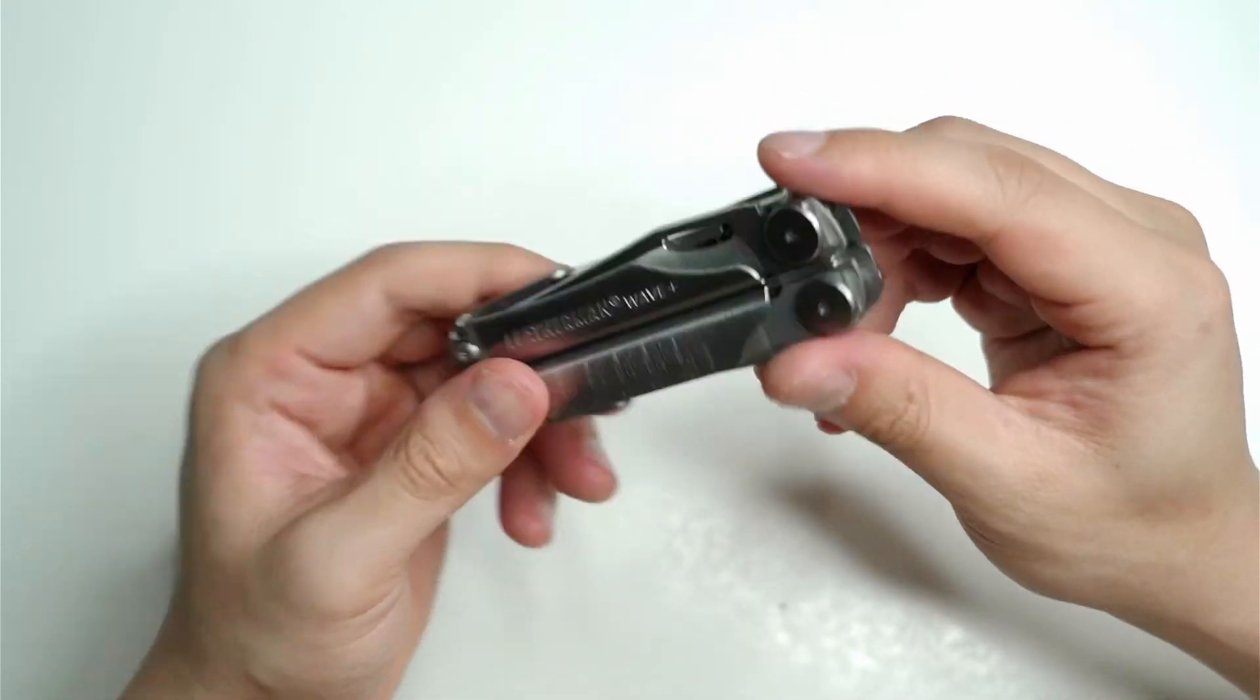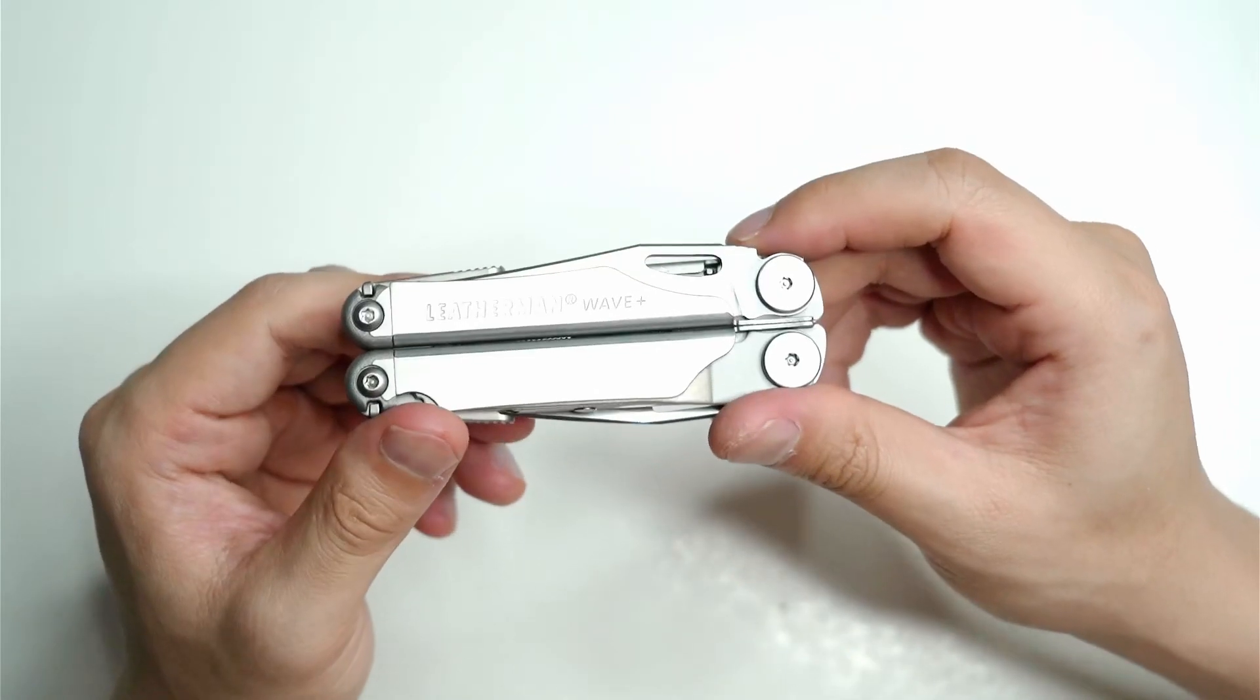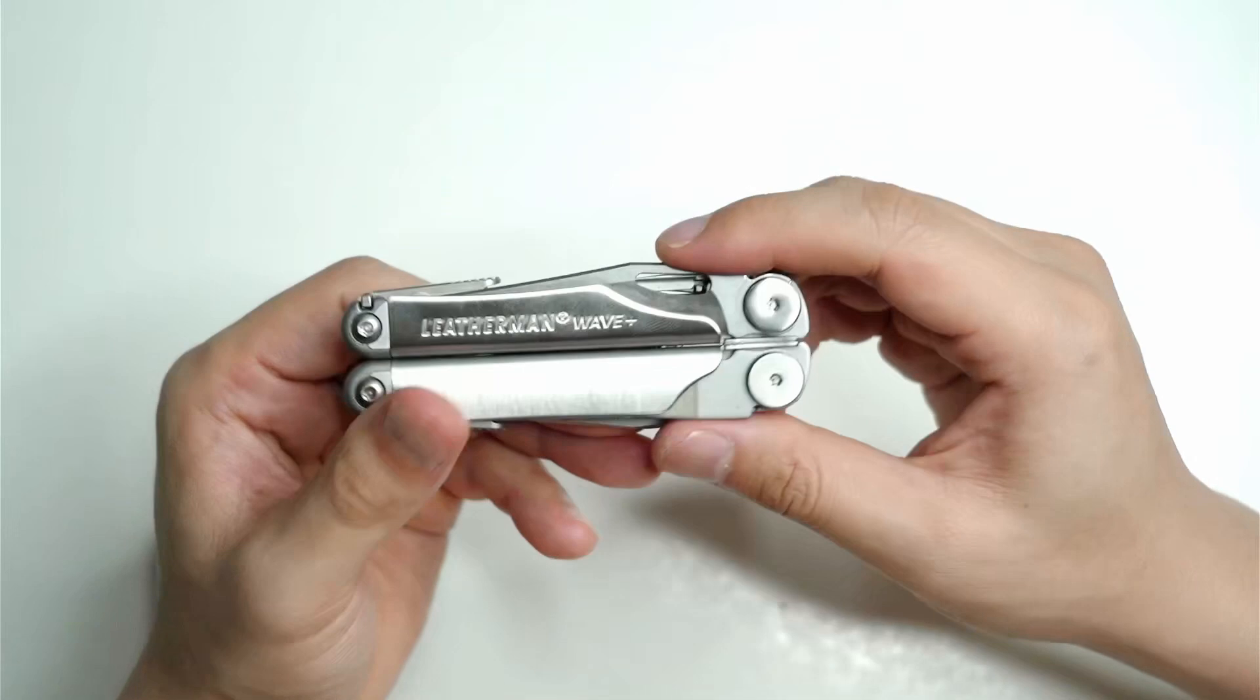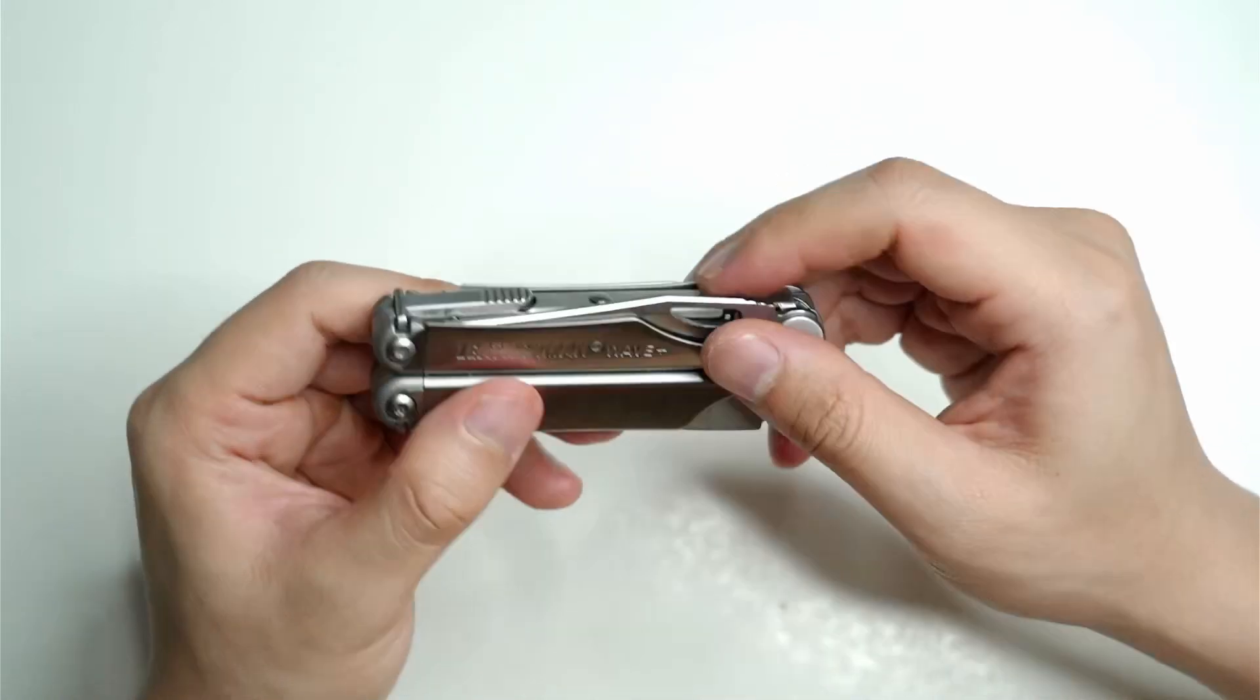I don't notice all too many differences on the new model, but there are some differences in the pliers, the wire cutters, which I'll show you in a moment. But firstly, let's just talk about what's on the outside.